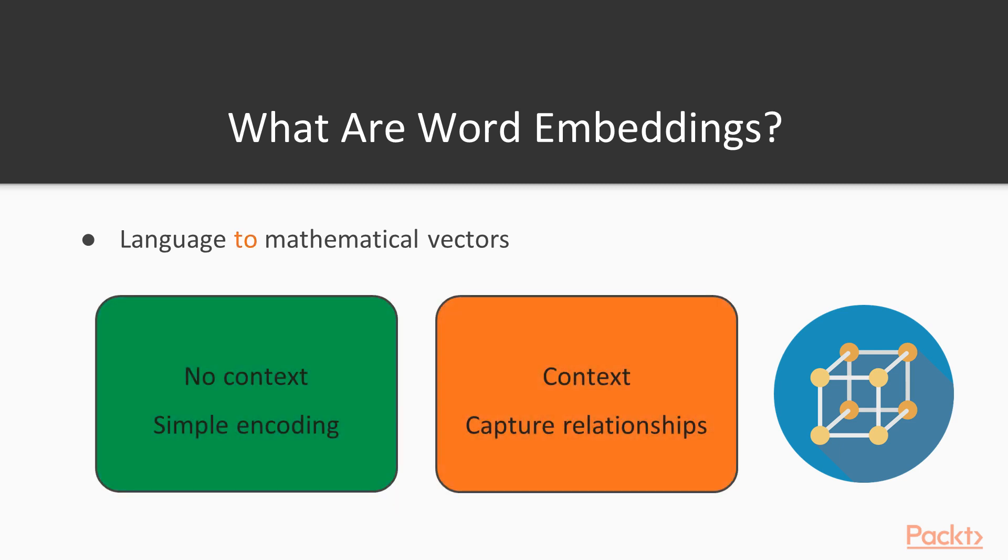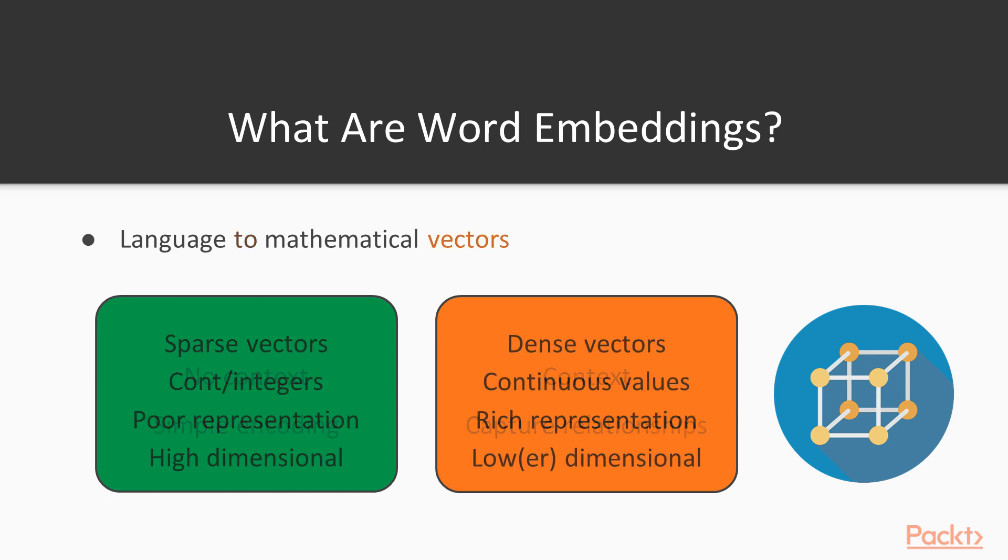How we obtain them is different. We will embed context in them and try to capture relationships in a certain way, so the vectors become more meaningful. Also, the vectors themselves will look different.